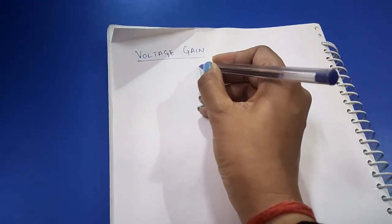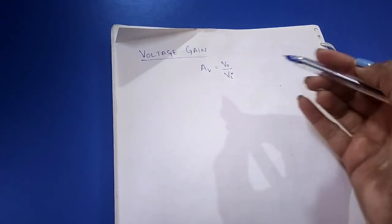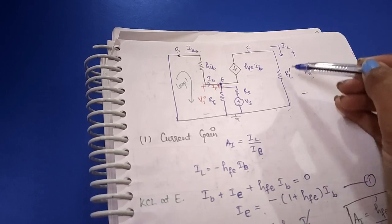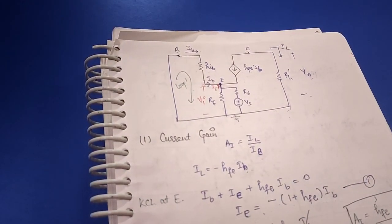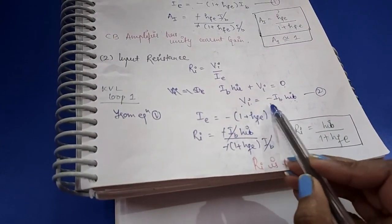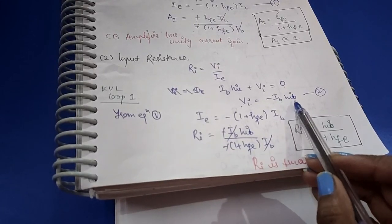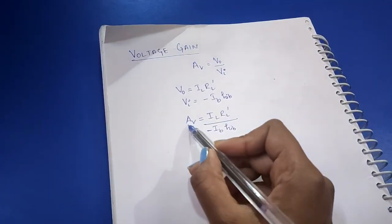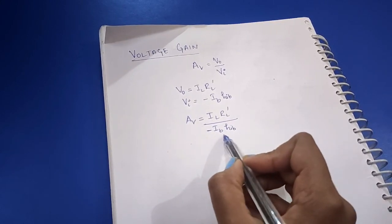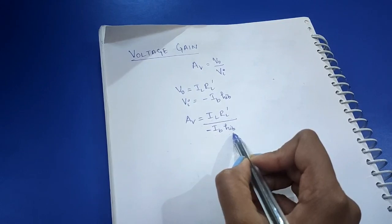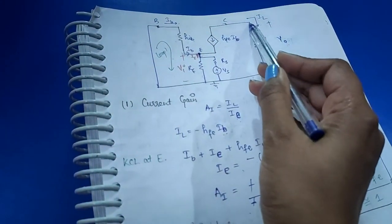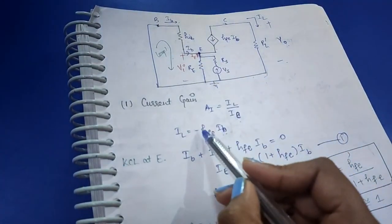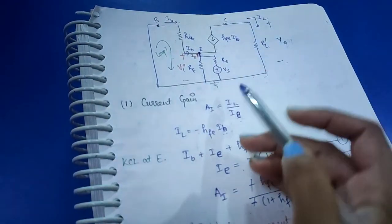Now let's calculate the voltage gain, defined as the ratio of output voltage to input voltage. The output voltage is IL·RL', and the input voltage VI = −IB·hIB. Substituting, the voltage gain AV = IL·RL' / (−IB·hIB). Since IL = −HFE·IB, substituting IL gives AV = HFE·RL' / hIB.